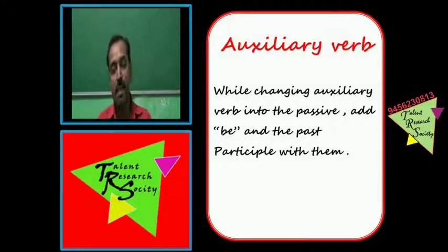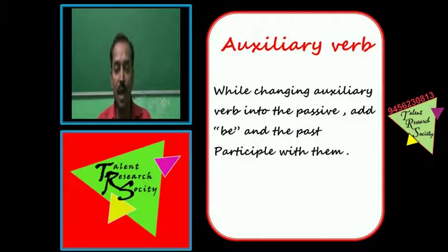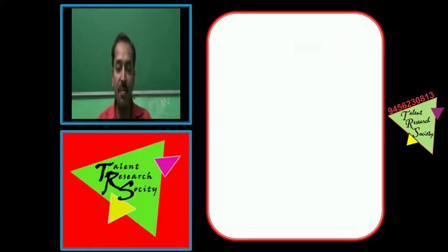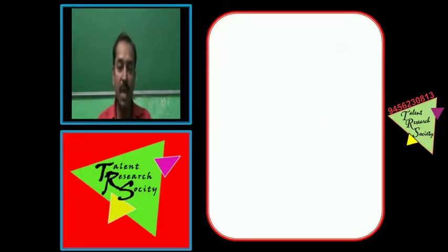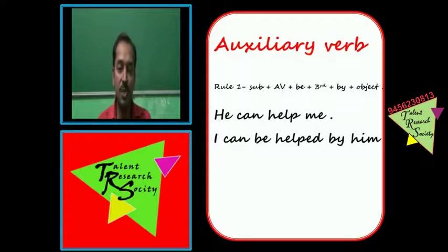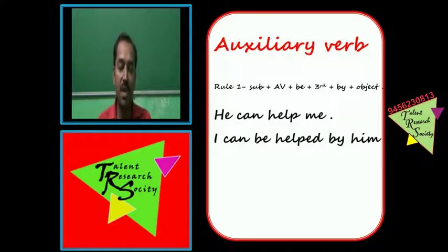Ab hum auxiliary verb wale sentence ko banana seekhenge — ki kaise hum auxiliary verb wale sentence ko active se passive mein badlein. While changing auxiliary verbs into the passive, add 'be' and the past participle with them. Auxiliary verbs include: can, could, may, might, should, would, must, ought.